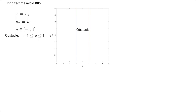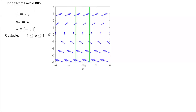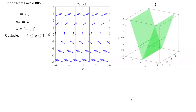Let's look at an infinite-time avoid backwards reachable set. My dynamics are simple: change in position is velocity, change in velocity is acceleration, and acceleration is bounded between −1 and 1. I have an obstacle in position space between −1 and 1, existing across all velocities. The first thing we do is define a terminal cost function — typically a signed distance function — negative inside the obstacle and positive outside.